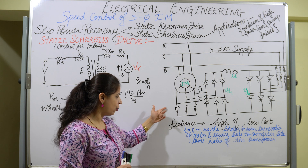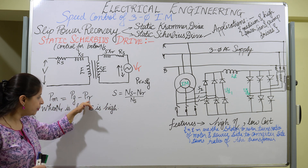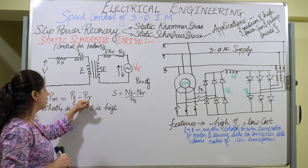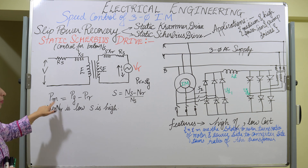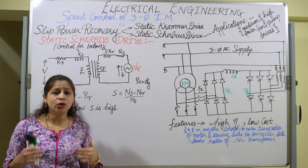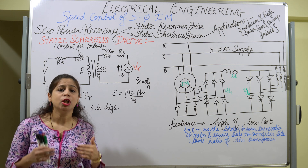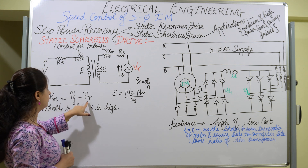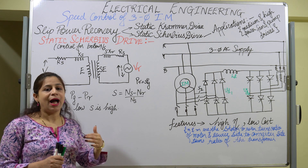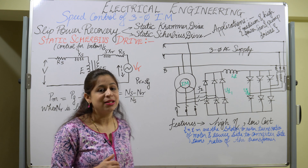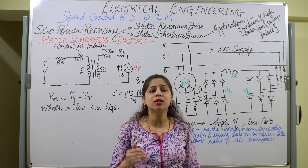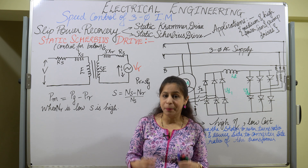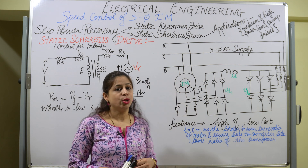If PR equals zero, then PM equals PG and the motor runs at natural speed. But when PR is very large, PM is very small and the motor runs well below synchronous speed. When PR is very small, PM equals PG and the motor runs well above synchronous speed. Both extreme cases are not good for motor operation, so speed must be controlled.